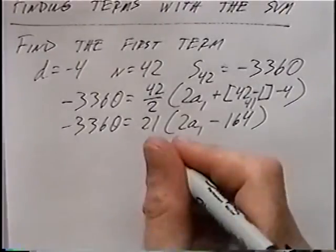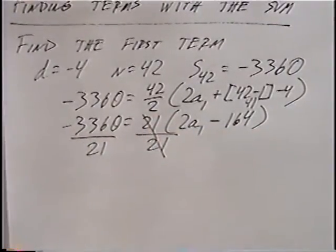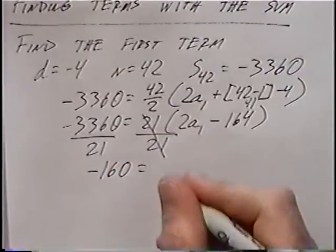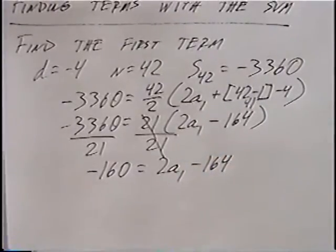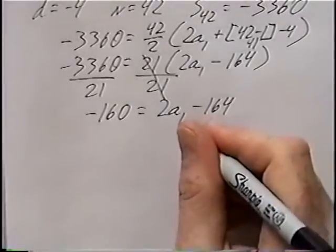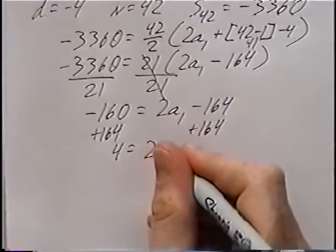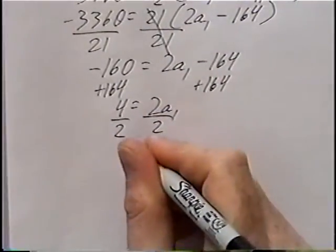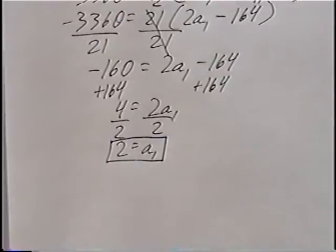From here, we divide both sides by 21. Negative 3,360 divided by 21 equals negative 160, which equals 2 times a sub 1 minus 164. Adding 164 to both sides gives 4 equals 2 times a sub 1, and dividing by 2 gives a sub 1 equals 2. Given the sum, the difference, and the number of terms, the first term in the sequence is 2.